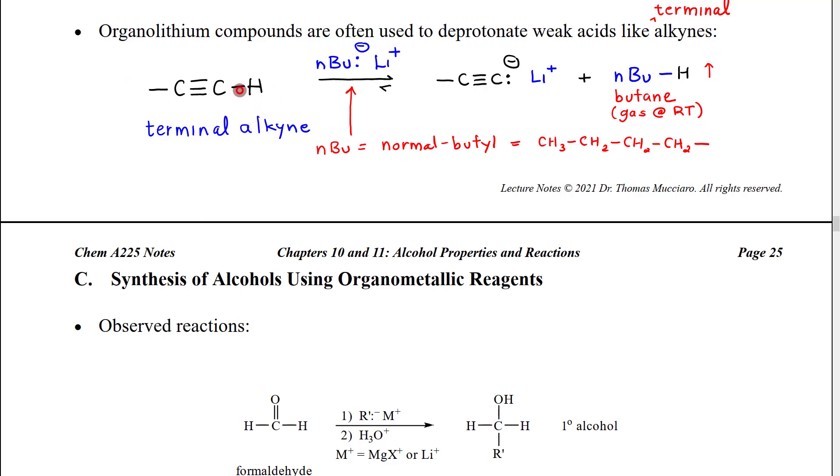If we mix a terminal alkyne with n-butyl minus lithium plus, which we abbreviate n-butyl lithium - n-butyl, you may recall from last semester, is the common name of the straight butyl chain, the normal butyl chain - if we mix them together, the strong base, butyl minus ion, will come over and remove a hydrogen from the terminal alkyne.